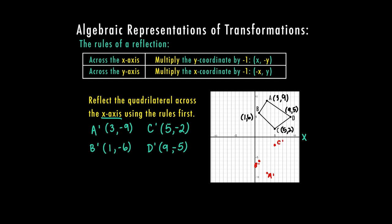C is at (9, -5). If you've seen the reflection video, you'll remember we counted to the x-axis and then went the same number in the other direction. Sometimes following the rules is easier than counting all those points on the graph. Notice that the x values don't change — only the y values turn negative.